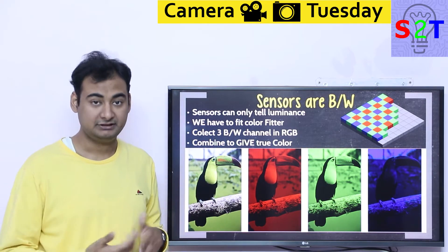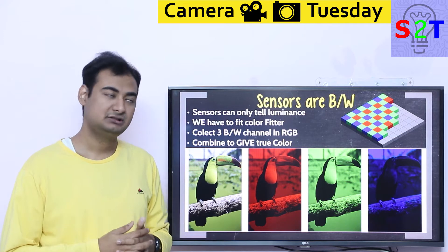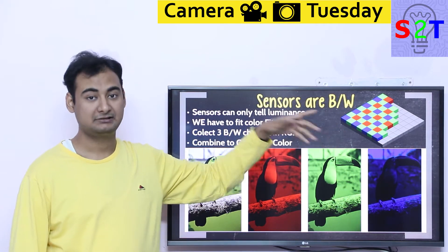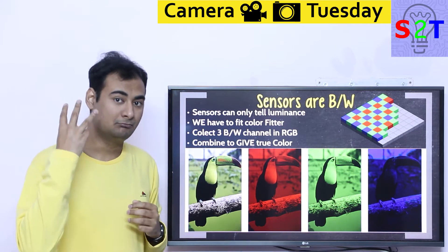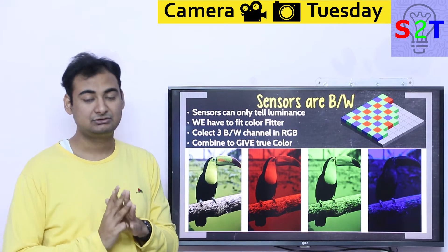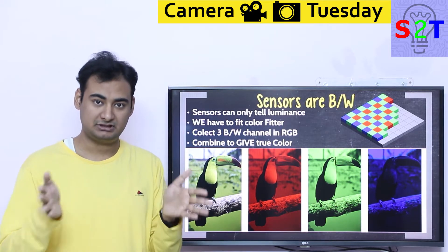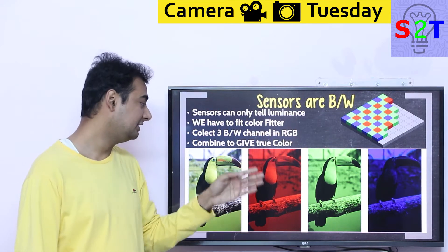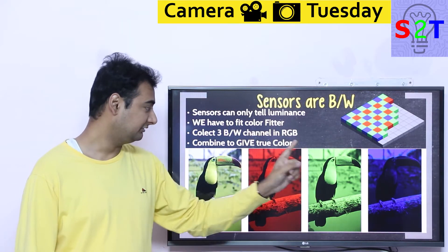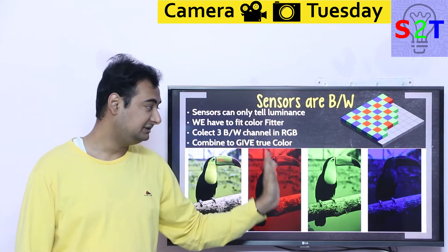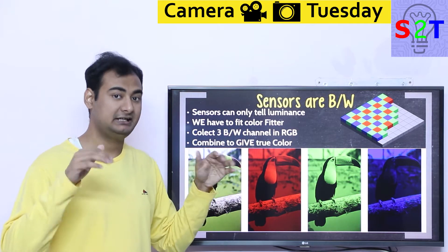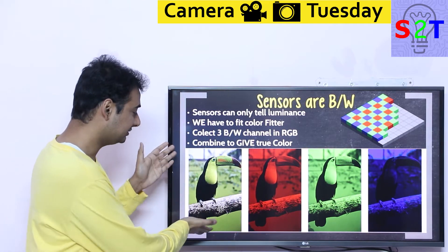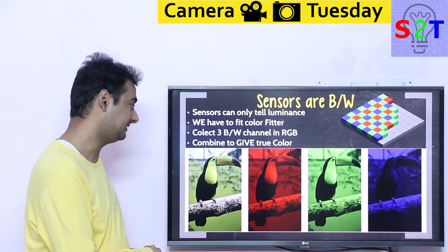So what do we do to get color out of it? In short, we put a color filter on the sensor. That way we get three monochromatic channels. In those three channels, we have filters specified — red, green, and blue. These three black and white images, aka monochromatic images, go to your computer, which combines them and gives you your true-life color images.